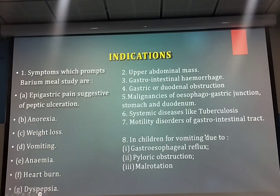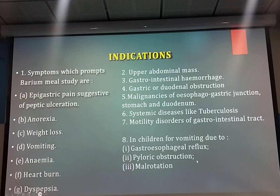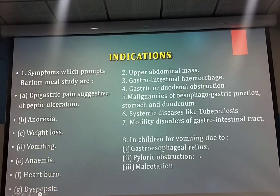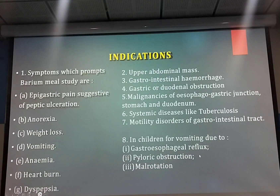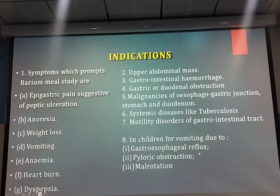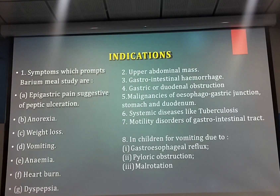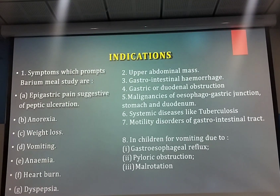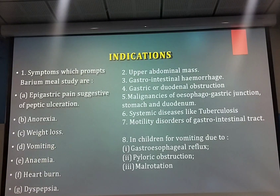In children, indications include reflux, pyloric obstruction, and malrotation — especially in newborns. If you are suspecting any obstruction, you have to see whether there is pyloric obstruction, which is a very common condition in children. The pylorus is the distal part of the stomach; if there is obstruction in the pylorus, the stomach will be overdistended.